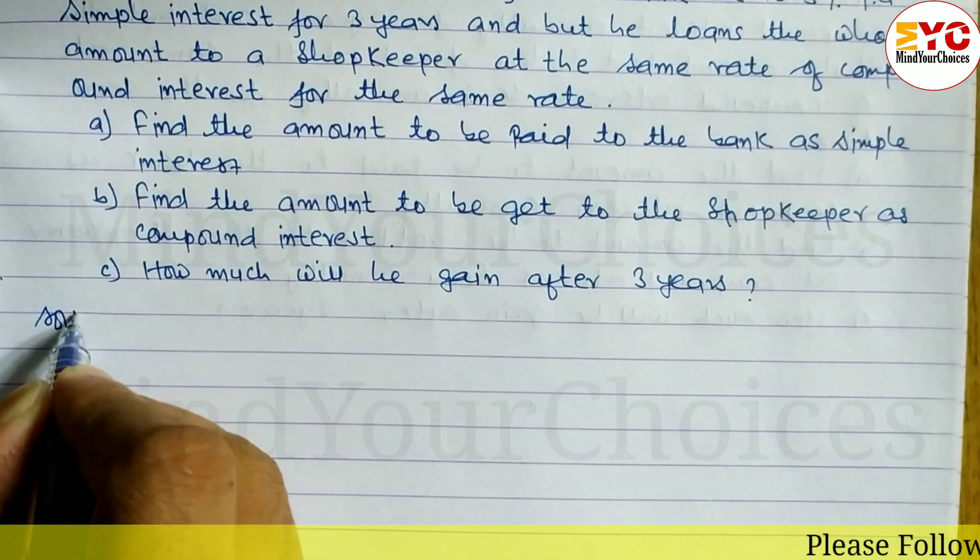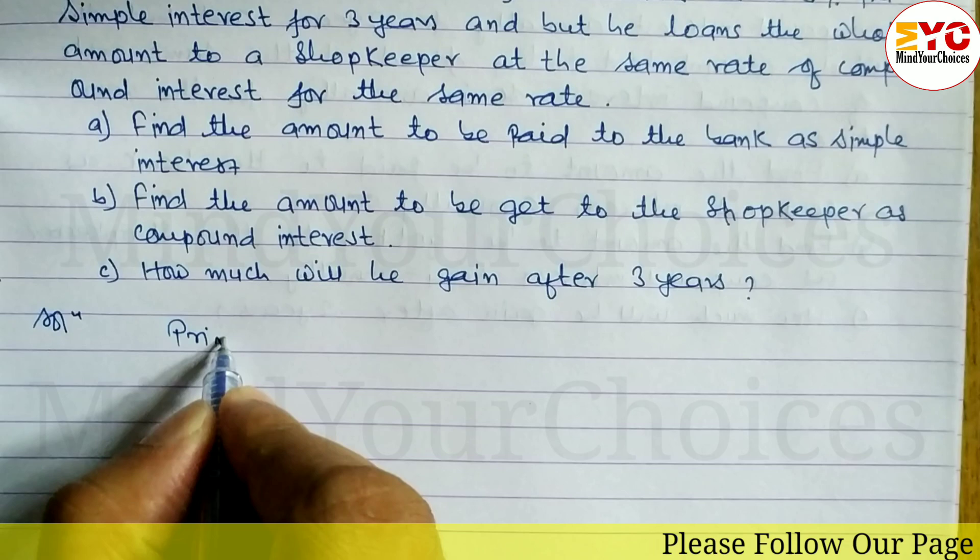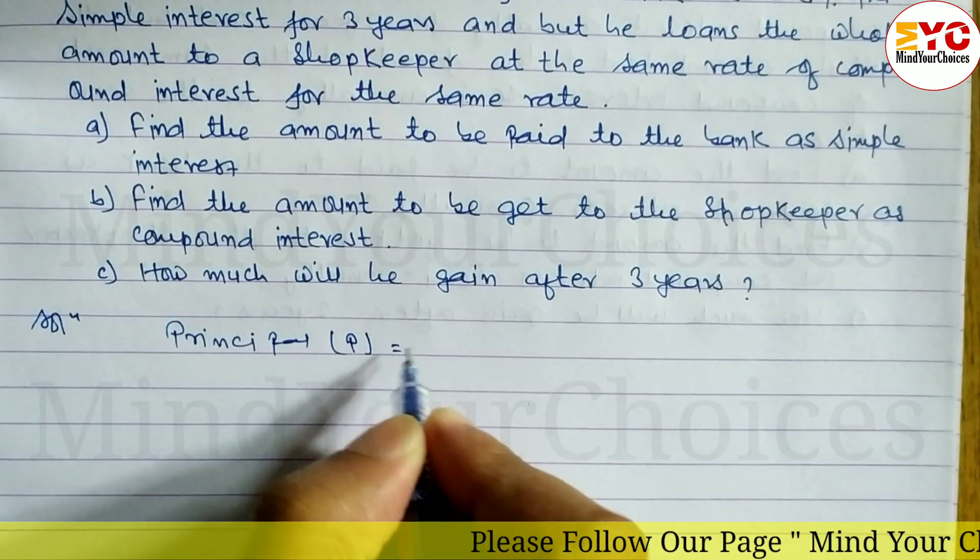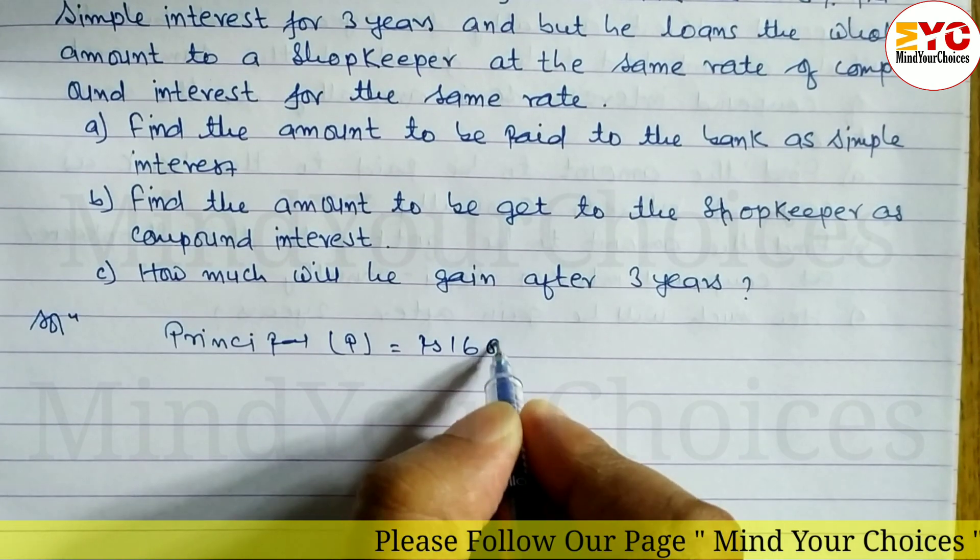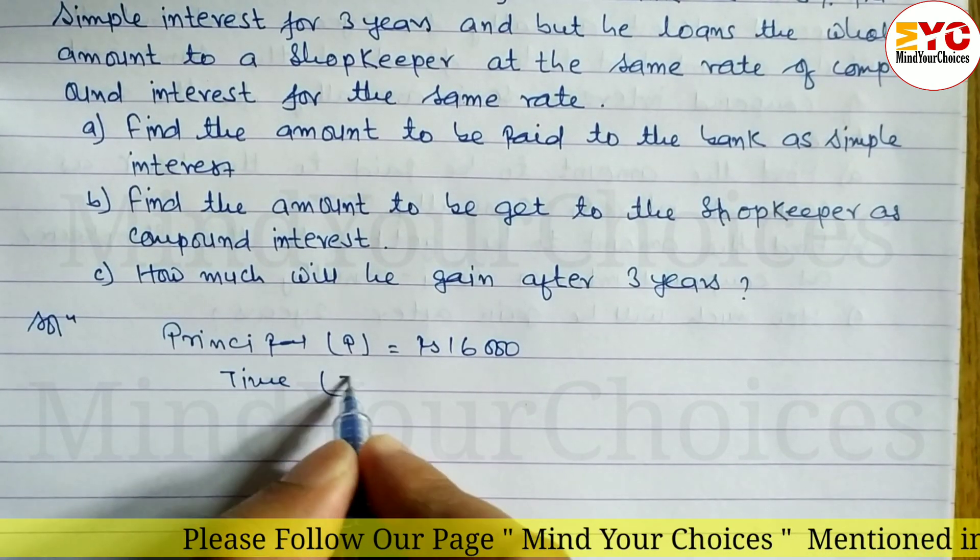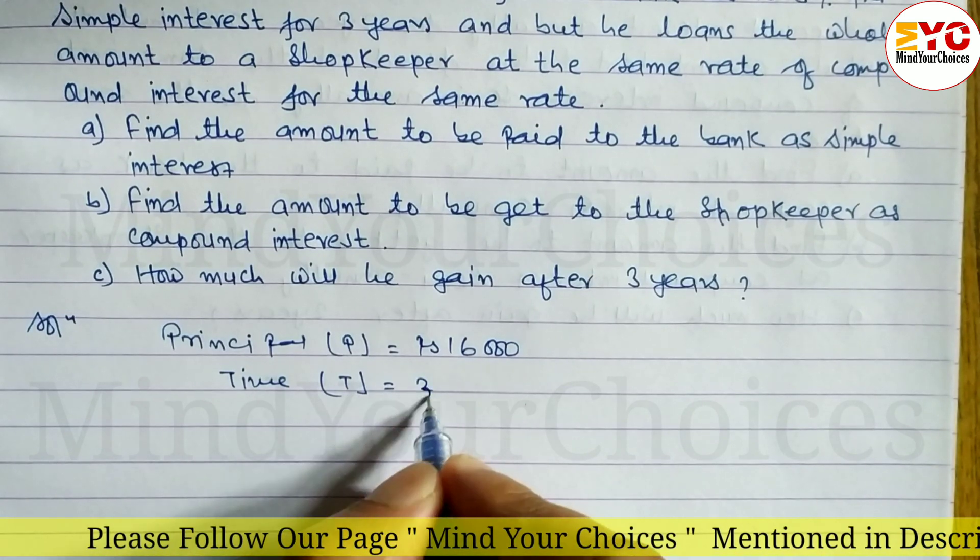Let's start. Here, Principal (P) = Rs. 16,000, Time (T) = 3 years, Rate (R) = 12.5%.